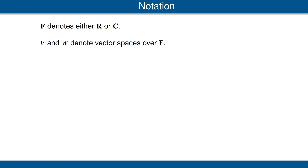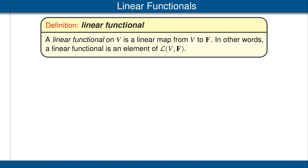Let's begin with our usual quick review of notation. F denotes either the scalar field R of real numbers or the scalar field C of complex numbers. V and W denote vector spaces over the same field F. Linear maps from a vector space to itself are sufficiently important that we gave them a special name: operators.